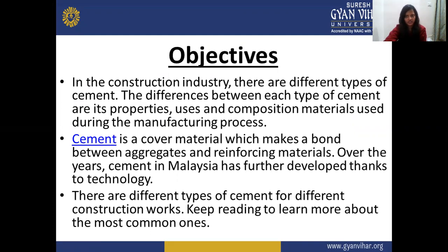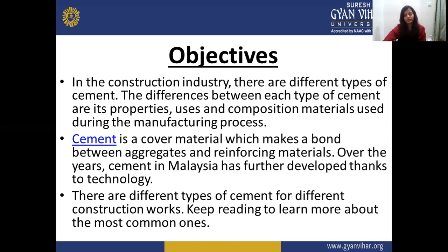In the construction industry, there are different types of cement. The difference between each type of cement are its properties, uses, composition, and material used during the manufacturing process. We have to understand that if we have some modifications in the conventional type of concrete, there are certain properties which come along with the modification.